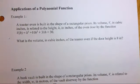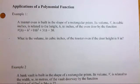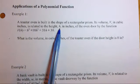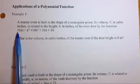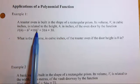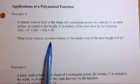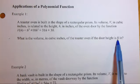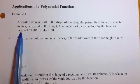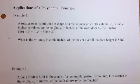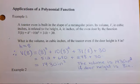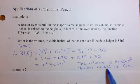This next question looks at applications of a polynomial function. A toaster oven is built in the shape of a rectangular prism. Its volume v in cubic inches is related to the height h in inches of the oven door by the function v(h) = h³ + 10h² + 31h + 30. What is the volume in cubic inches of the toaster oven if the door height is 8 inches? We substitute h = 8 into the equation, and our answer is 1430 cubic inches.